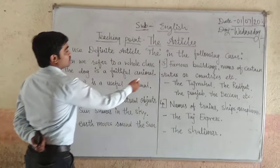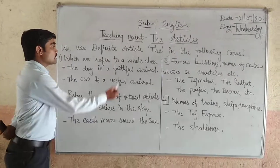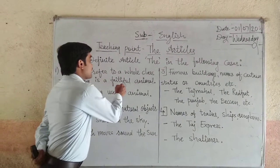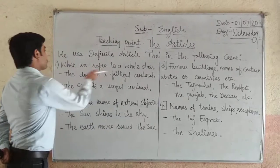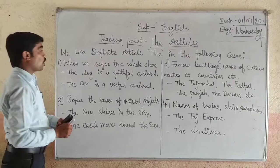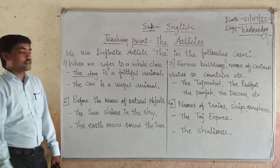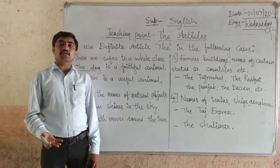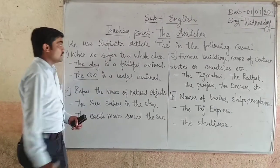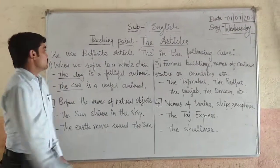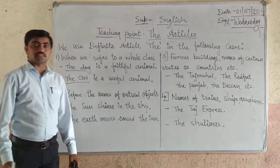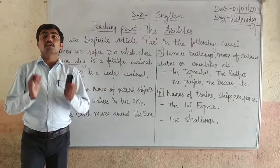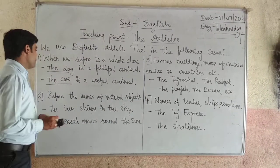The dog is a faithful animal. Here, 'the dog' refers to one whole group, and 'faithful animal' is also one group. Similarly, the cow is a useful animal. When we refer to a whole class or whole group, that time we have to use the article The.